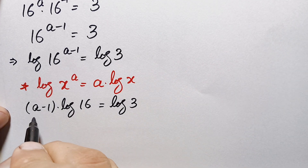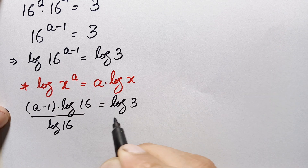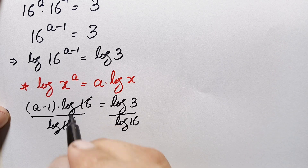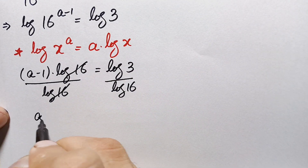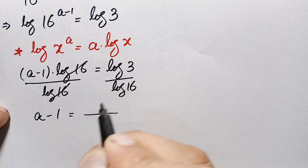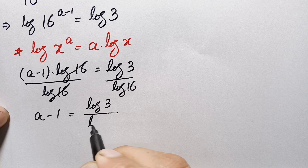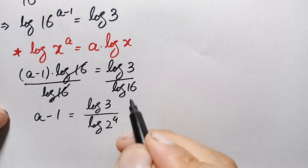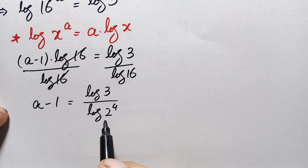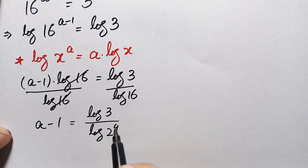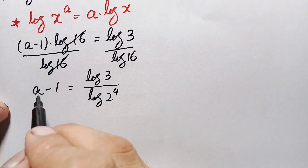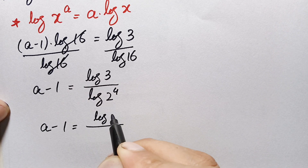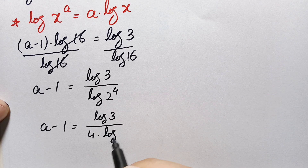Now we divide both sides by log of 16. On the left, log of 16 cancels, leaving only a minus 1 equal to log of 3 divided by log of 16. We can write 16 in exponential form as 2 raised to power 4. In the denominator, we again use the logarithm property and move the power 4 to the front of log 2: so this becomes a minus 1 equals log of 3 divided by 4 times log of 2.